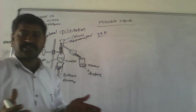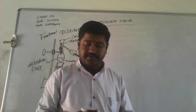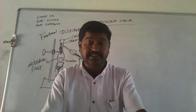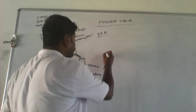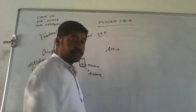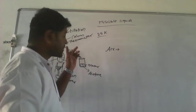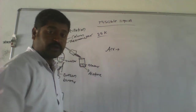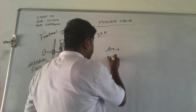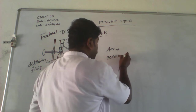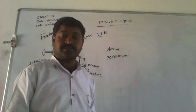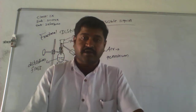The process remains the same. For example, to separate different gases from air, we use this Fractionating Column. And also to separate petroleum products, we use this Fractionating Column.